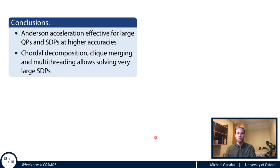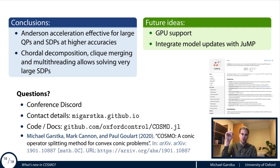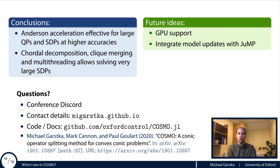To conclude: Anderson acceleration works really well for solving larger convex problems to higher accuracy solutions and is now used by default in COSMO. The combination of chordal decomposition, clique merging, and multi-threading allows solving very large SDPs, and all these features work together. Future ideas include GPU support for COSMO and more intelligent integration of model updates with JuMP. If you have any questions, please post them in the conference Discord or contact me directly — you can find details on my website and in our documentation and recent publication.